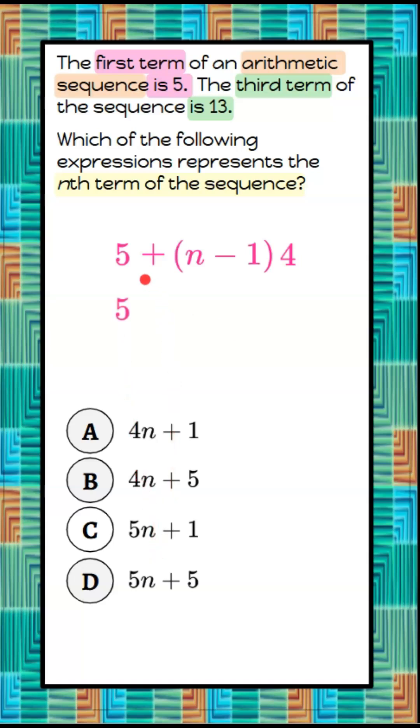We're going to start with our 5, and now we have to distribute the 4 to the n minus 1. 4 times n is 4n. 4 times negative 1 is going to give us negative 4.